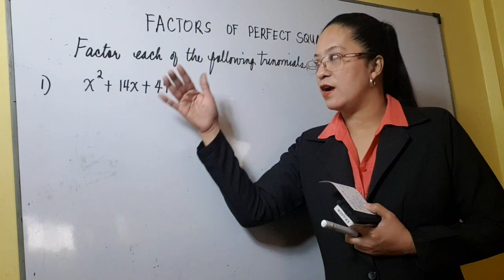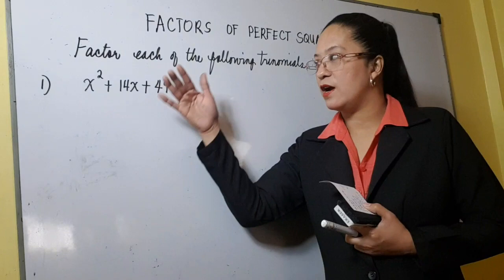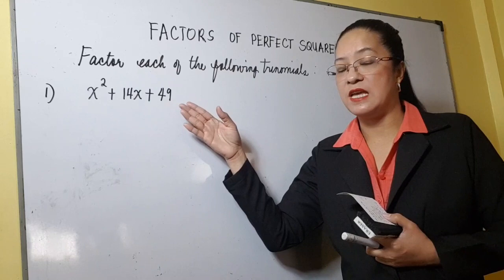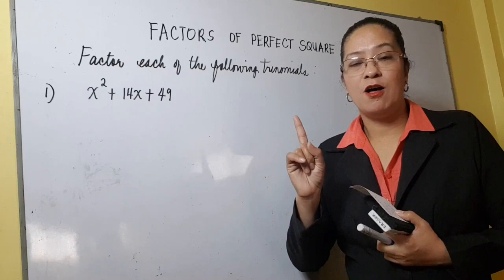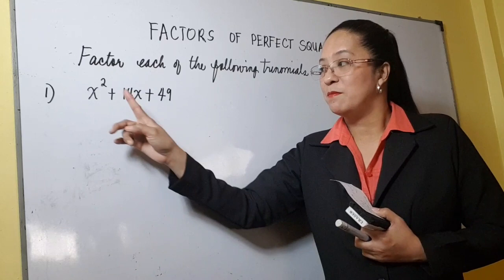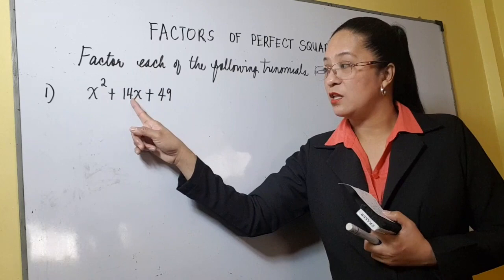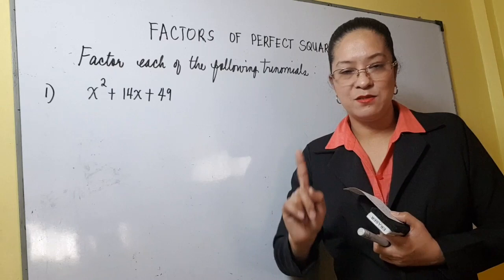Let's start with number 1: x squared plus 14x plus 49. Katulad na sabi ko dun sa common monomial factoring — tignan nyo muna kung may common monomial factor. May x, may x, walang x — so x is not a common factor. The numerical coefficient is 1, this is 14, this is 49. So there is no common monomial factor.